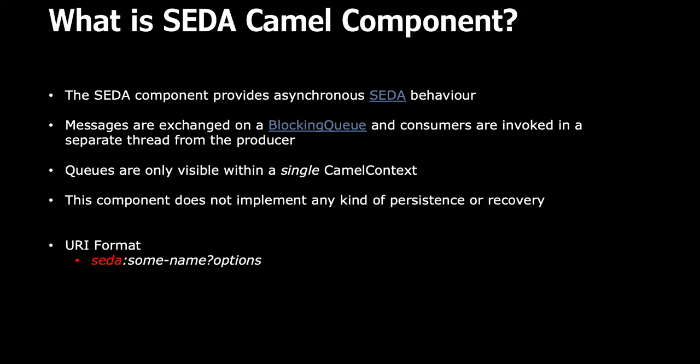Queues are only visible within a single Camel context — this is a very important thing to note. If you have multiple Camel contexts, you cannot invoke a SEDA running in another Camel context, so you need to make sure your SEDA route is within the same Camel context. Also, this component does not implement any kind of persistence or recovery. If your system crashes, all messages sitting in the queues awaiting processing will be lost. If you need persistence or recovery, you have to use a messaging system or JMS.